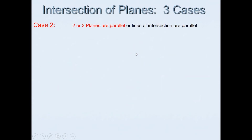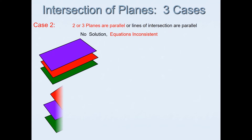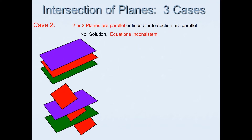In Case 2, two or three planes are parallel, or the lines of intersection are parallel. In this situation there is no solution. It's like having three pieces of paper stacked on top of each other — they are parallel so they will not intersect. Or two planes are parallel and there is no common intersection among the three planes, so there will be no solution.